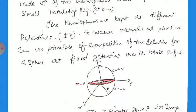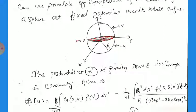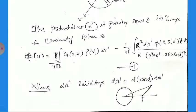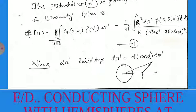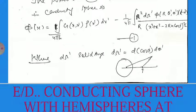To calculate the potential at a point, we can use the principle of superposition of solutions for a sphere at a fixed potential over its full surface. The potential at point X is given by the Green's function: φ(X) = (1/4π) ∫ G(X, X') dV' − (1/4π) ∫ R² dΩ' φ(R, θ', φ') × (R² − X²) / (X² + R² − 2RX cos γ)^(3/2).